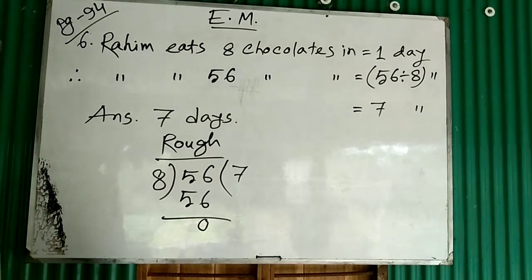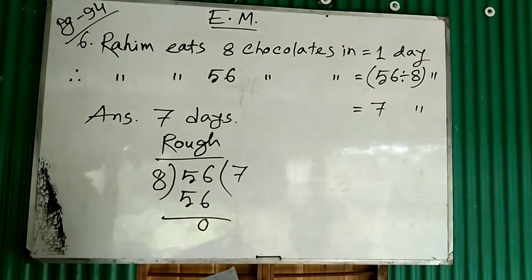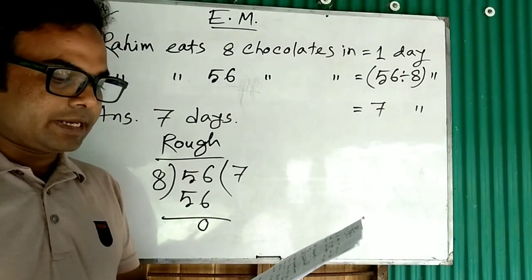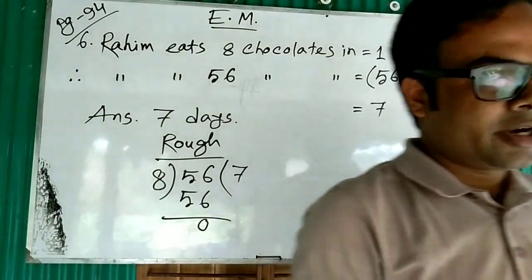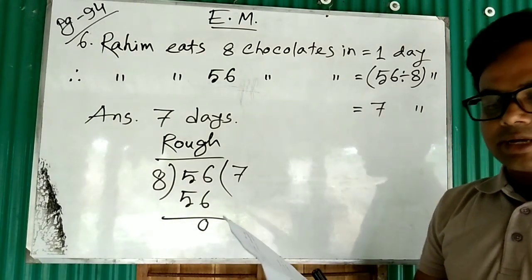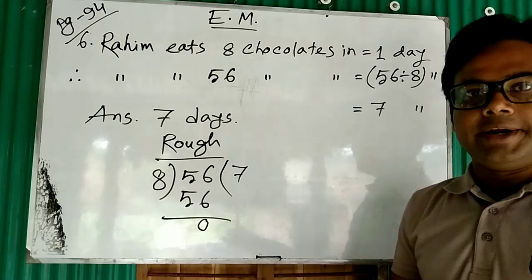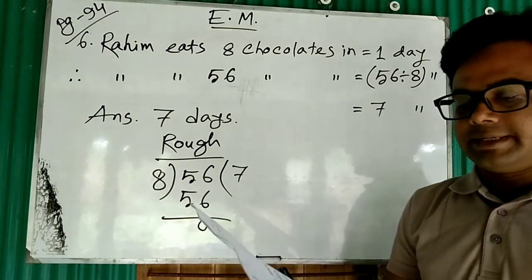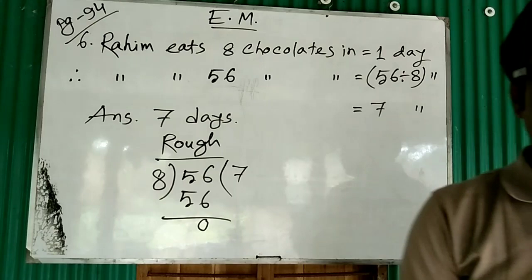Write down and read the next question properly. Question number seven: Shaman bought a book for 48 taka and color pens for 36 taka. How much taka did he spend? There are two items - one is a book, another is pens. For the book 48 taka and for pens 36 taka. How much taka did he spend in total? We add this.